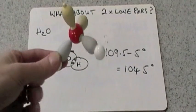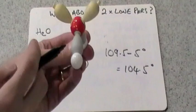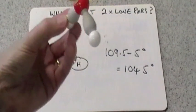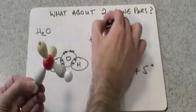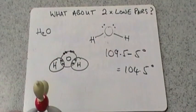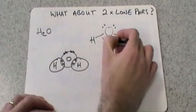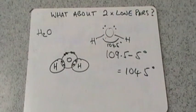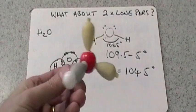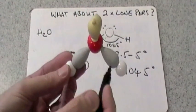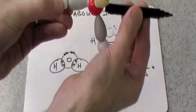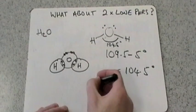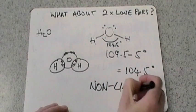Drawing the water molecule is straightforward: the two O–H bonds are in the same plane as each other. Place the central oxygen atom, draw the two hydrogens in that plane, and indicate the lone pairs above. The bond angle is 104.5 degrees. If all four pairs had been bonding pairs the shape would be tetrahedral, but we only consider the bonds. The shape is non-linear — it doesn't go in a straight line — so water is described as non-linear.